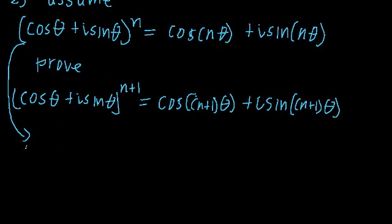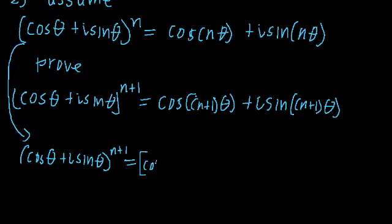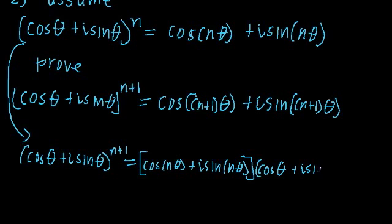So on the left hand side we're going to get cosine theta plus i times sine theta to the n plus 1 power, equal to cosine of n theta plus i times sine of n theta, multiplied by cosine theta plus i sine theta. We notice the left hand side agrees, and we need to show that both expressions are equal to cosine theta plus i sine theta raised to the n plus 1 power. So what we need to do is show that this expression equals this expression here in order to prove our De Moivre theorem.